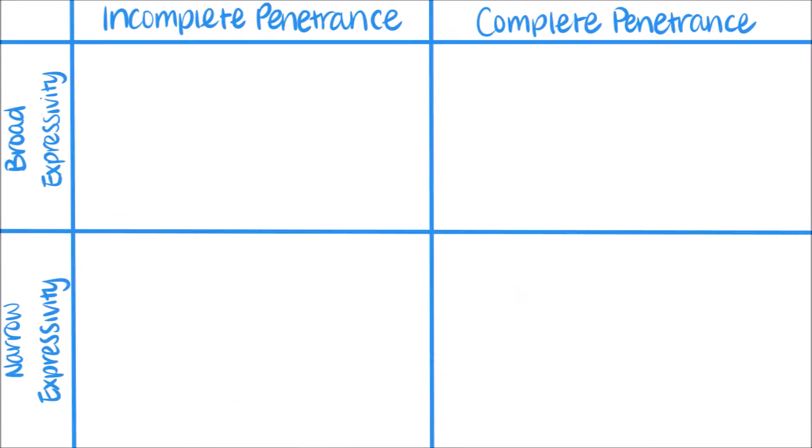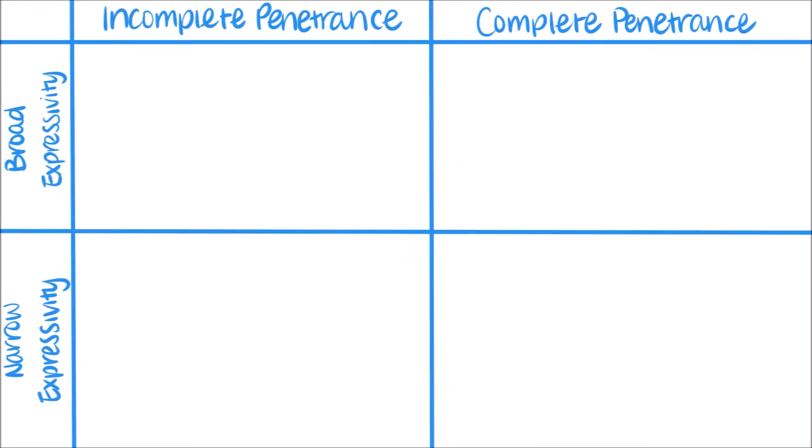Expressivity and penetrance are independent of one another. We can draw a table and think about what a sample group of individuals would look like if these two terms varied.